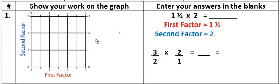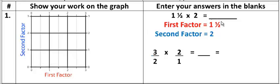So 1 and 1 half times 2 — we're going to take a look at using a graph type method here to figure this out. This will come in handy later on when you're using a ruler or anything else to measure fractions. So we're looking at 1 and 1 half times 2. Coming over here, we look at our first factor. We could have called 2 our first factor, but let's just use 1 and 1 half as our first factor.